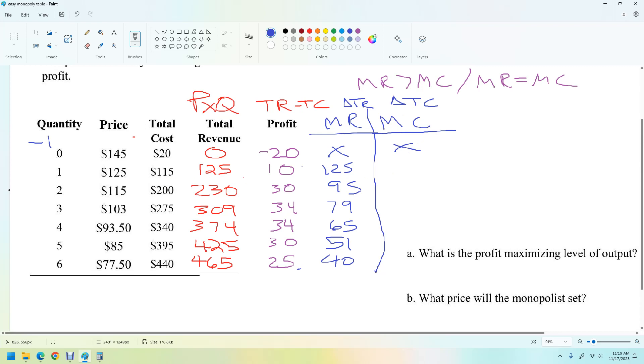And the change in total cost is 95. The change, so we're looking at here to here, here to here, this is 85, here to here, 75, here to here, 65.